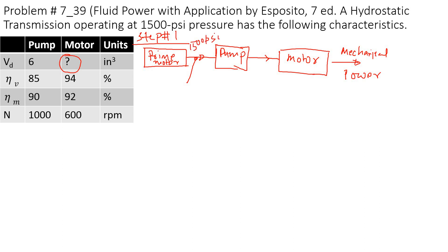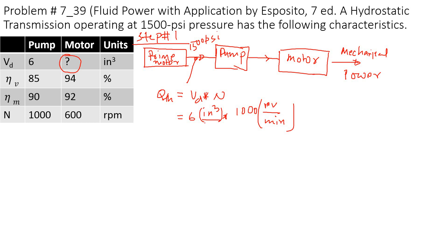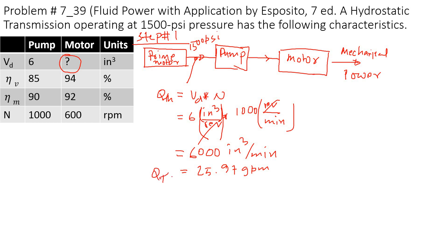We can calculate the theoretical flow produced by the pump. The theoretical flow equals the volumetric displacement times RPM. The volumetric displacement is 6 in³ and the pump speed is 1000 RPM. Typically, volumetric displacement is per revolution, but you can include that unit so it cancels out. That gives 6000 in³/min, which equals 25.97 gallons per minute — that's the theoretical pump flow.